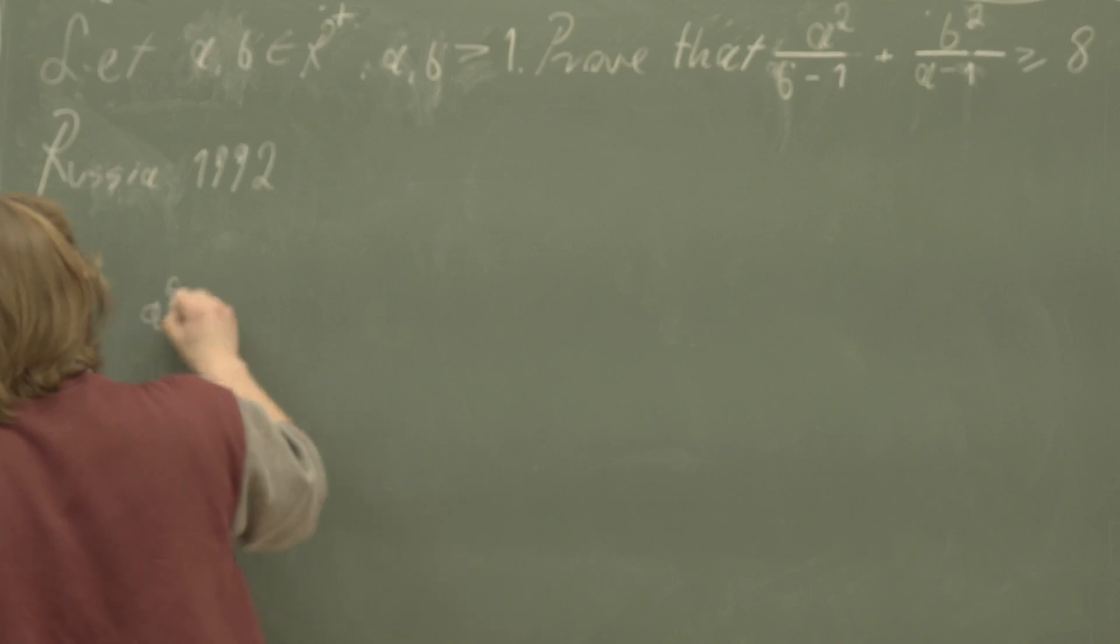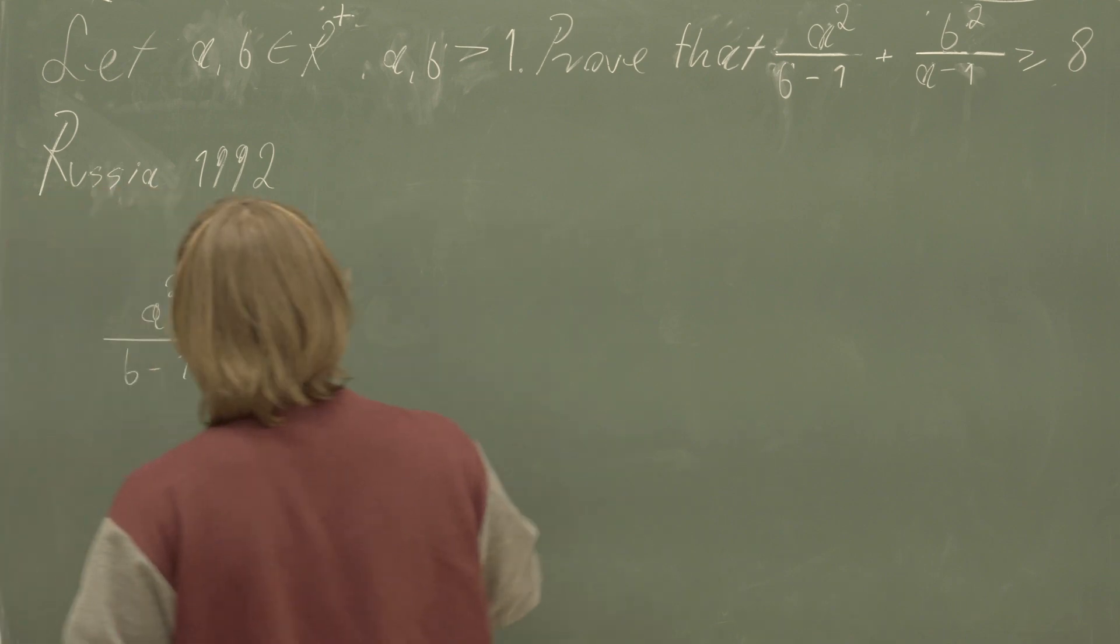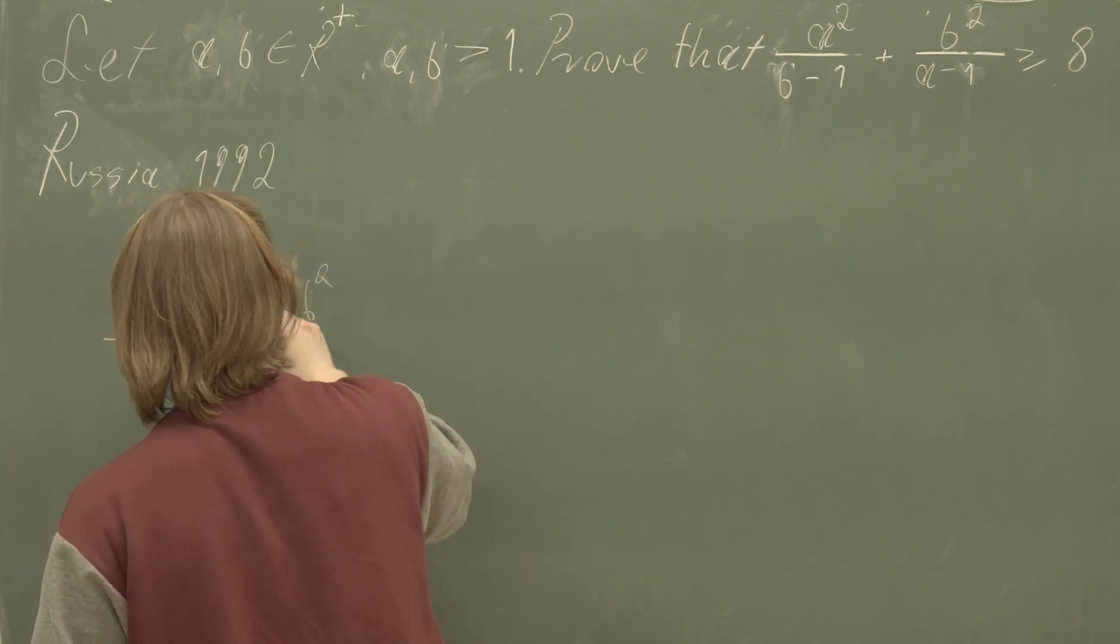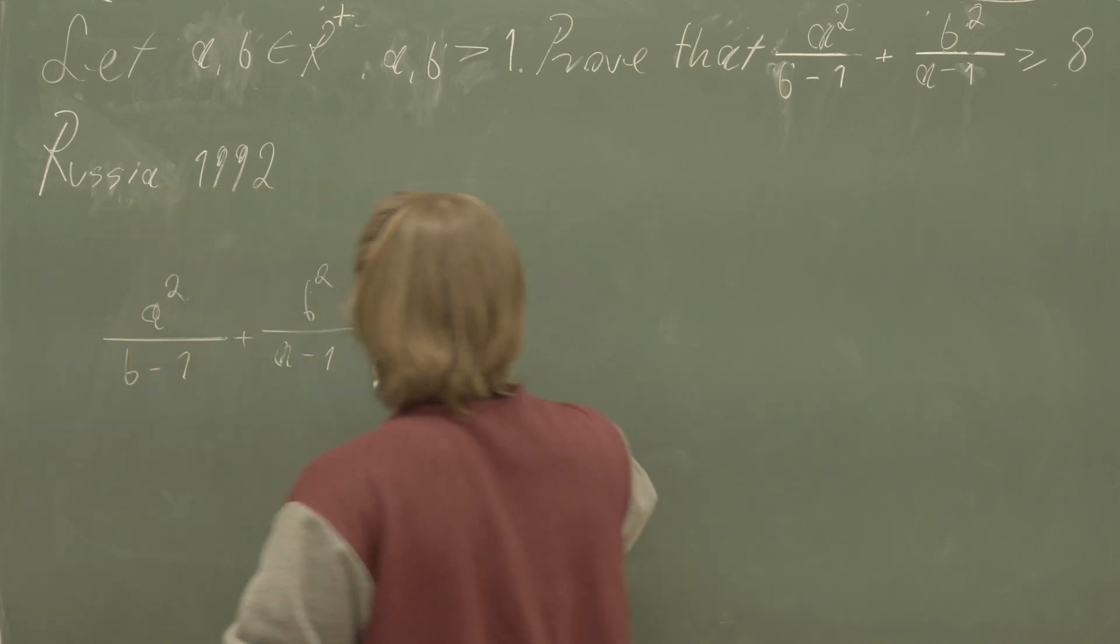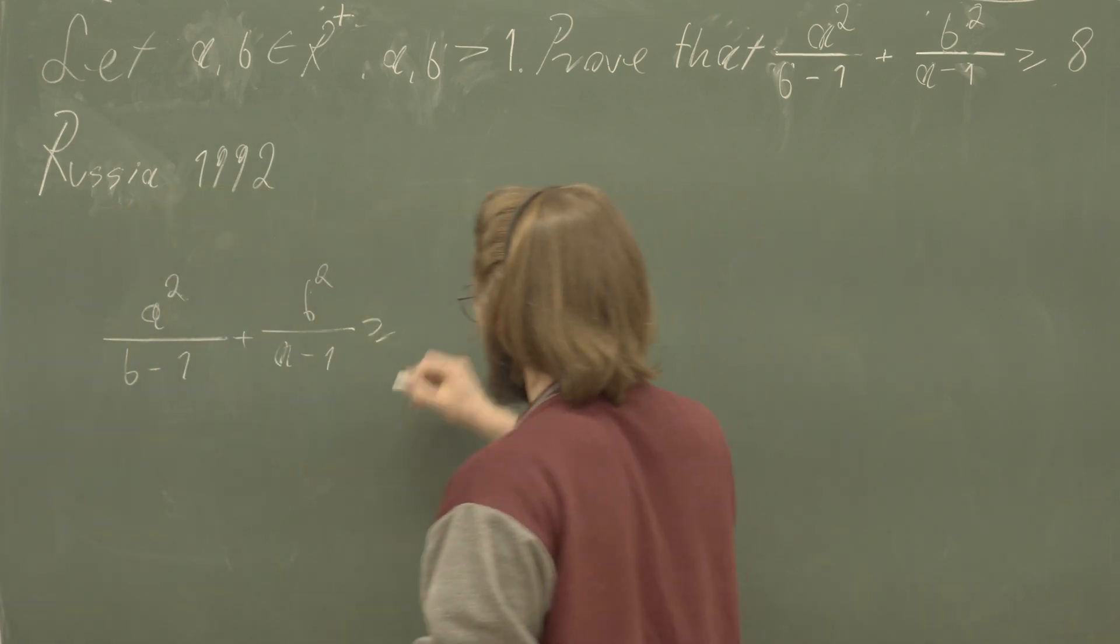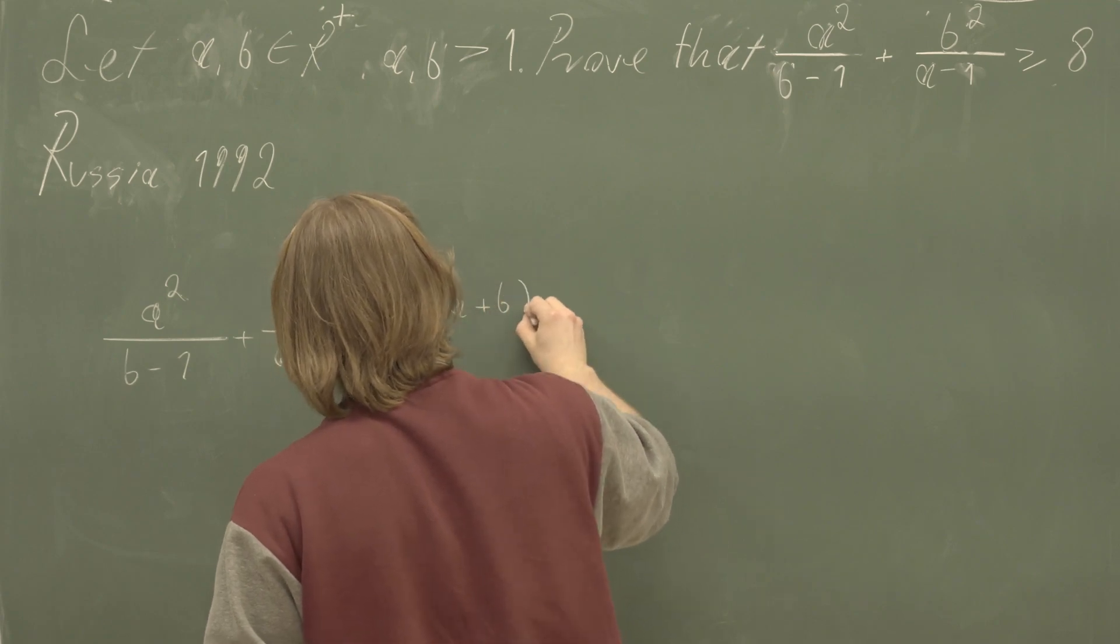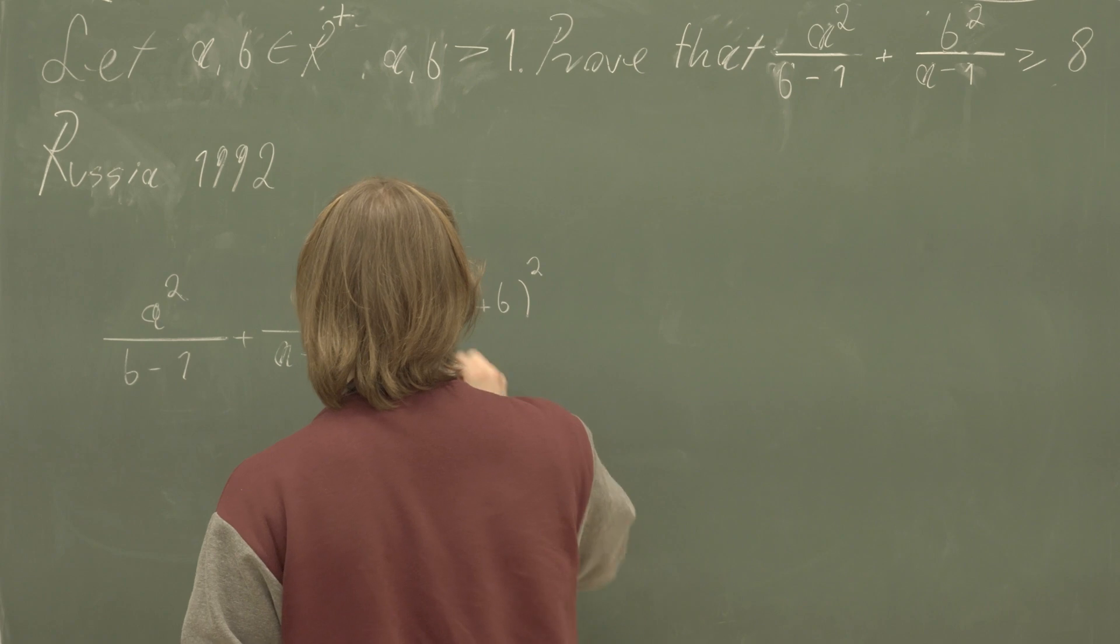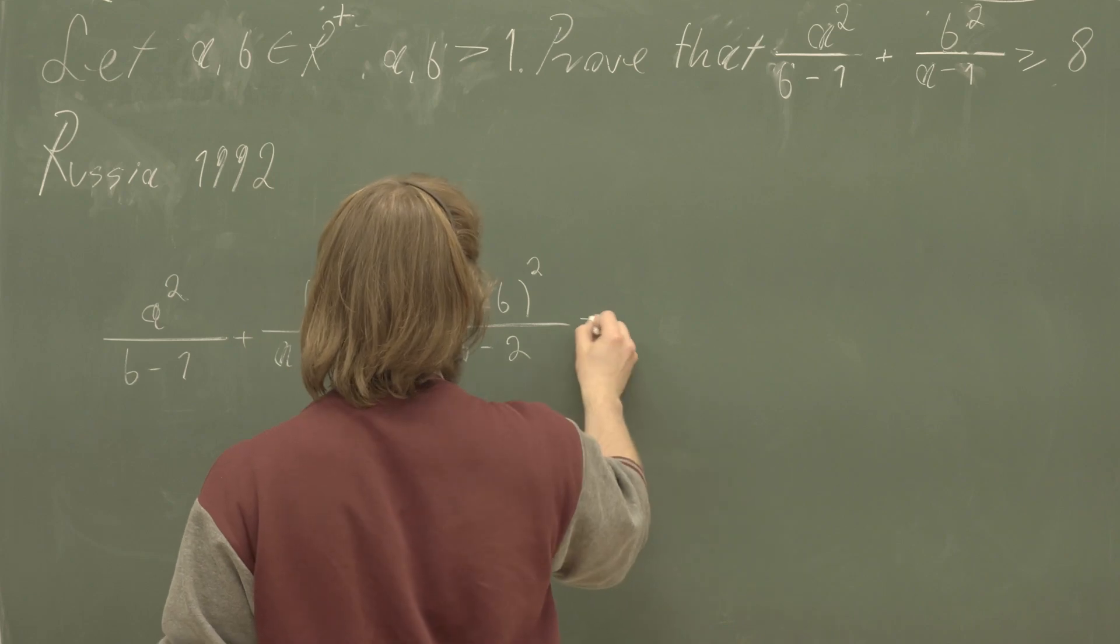So we're writing this thing: a squared over (b minus one) plus b squared over (a minus one) is going to be greater than or equal to, by the Cauchy-Schwarz inequality, (a plus b) to the power of two all divided by (a plus b minus two).